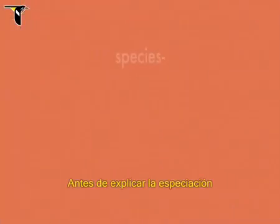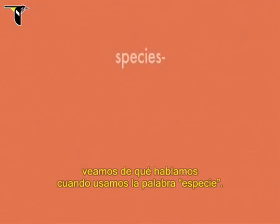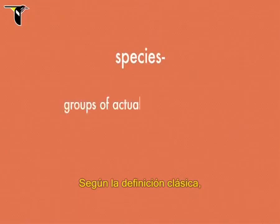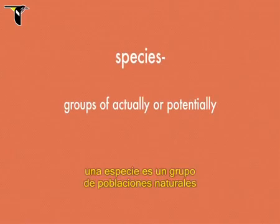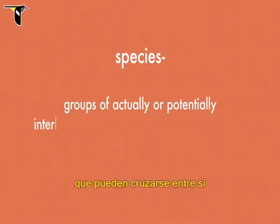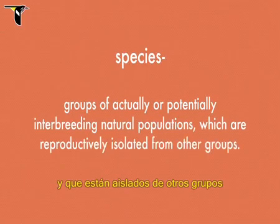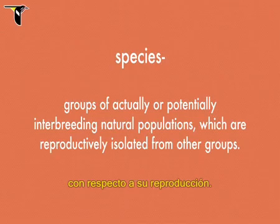Before we explain speciation, let's talk about what we mean when we use the word species. According to the classic definition, species are groups of actually or potentially interbreeding natural populations which are reproductively isolated from other groups.